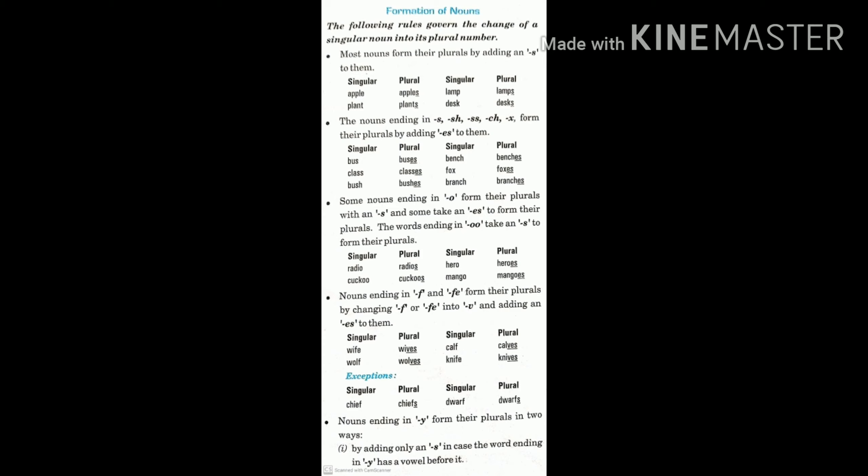Nouns ending in f and fe form their plurals by changing f or fe into v and adding an es to them. Like wife, wives, calf, calves.